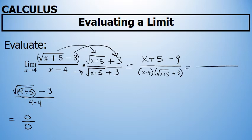Combining like terms in the numerator, 5 minus 9 is negative 4. We have x minus 4 in the numerator, and the product of x minus 4 and the square root of x plus 5 plus 3 in the denominator.